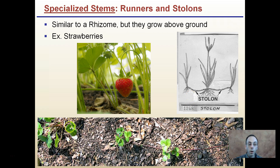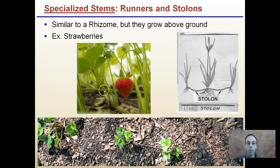Stolons help allow strawberry plants to spread and grow out. So next time you're strawberry picking, you can look and find the runners or the stolons and point them out and show the connections between certain plants.